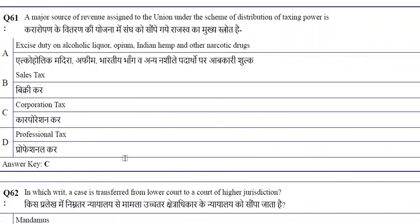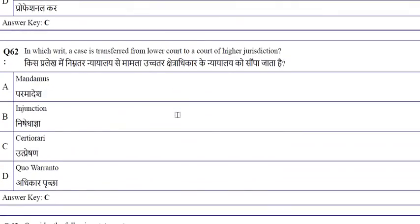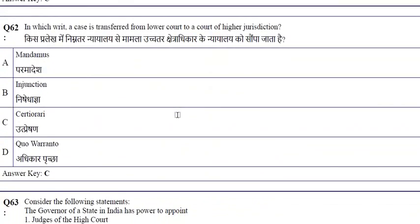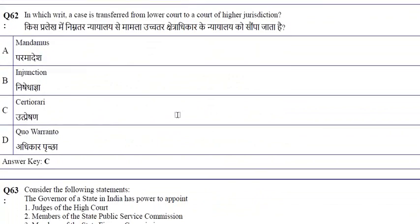The major source of revenue assigned to the union under the scheme of distribution of taxing power is corporation tax. When a case is transferred from a lower court to a court of higher jurisdiction, the writ used is certiorari.